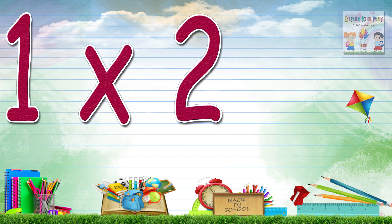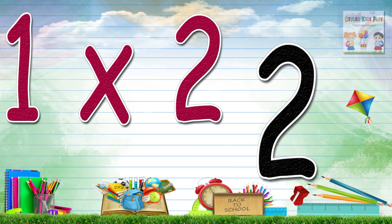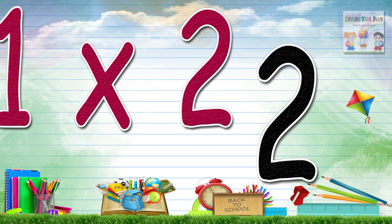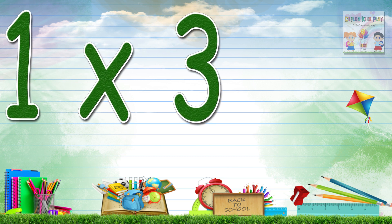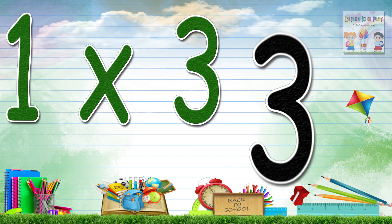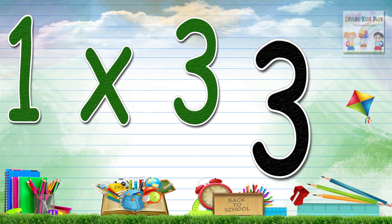One by two, two — equal do, dekay. One by three, three — equal tin, tunai.